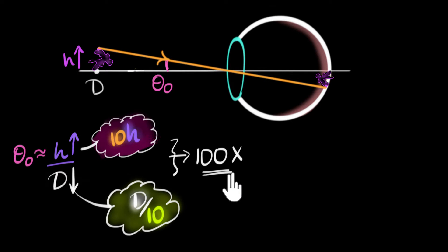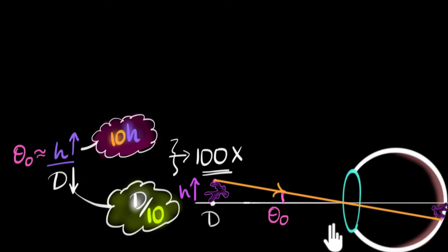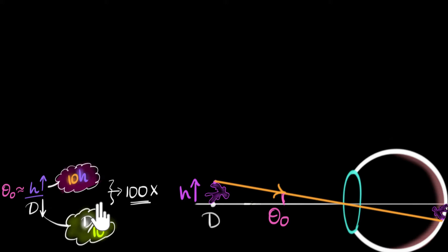So our compound microscope does two things. One, it stretches the height or the size of the object. That's one stage of magnification. The second stage is it allows your eye to go much closer than your near point, giving you a second stage of magnification, together giving you a huge magnification. So all we need to figure out is how do we practically build something that does this and this. Let's make some space to build our microscope.